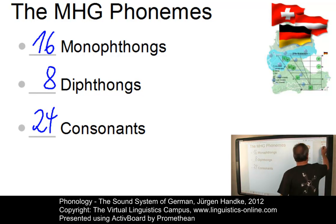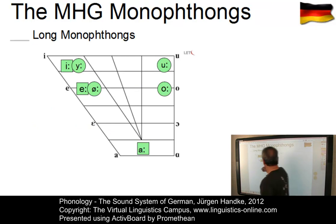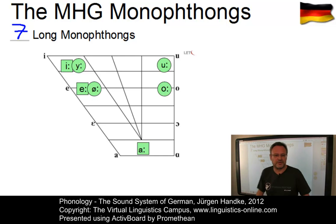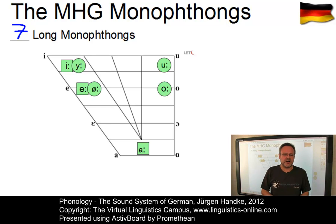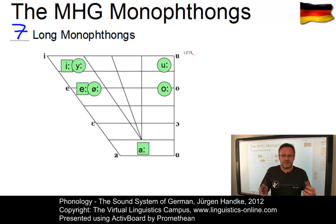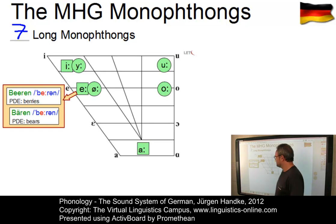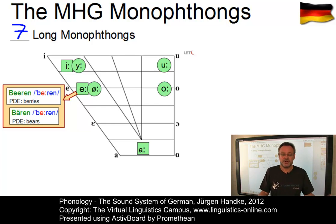Let us look at the long monophthongs first. There are 7 long monophthongs, or 8, depending on whether the two front vowels e and ē have merged. Most speakers, especially those who use the northern accents of German, like myself, merge these two vowels everywhere — for example, in words such as Beeren (the berries) and Bären (the bears), which are now homophones.